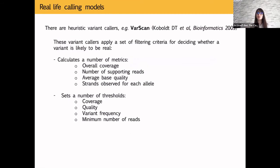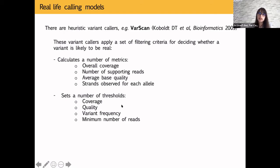In real life there are different calling models. Heuristic methods, like Varscan, apply a set of filtering criteria to decide whether a variant is likely real, considering overall coverage, number of supporting reads, average base quality, strand representation at each allele, and thresholds on coverage, quality, and variant frequency. They extend the naive approach into a more complicated set of criteria.